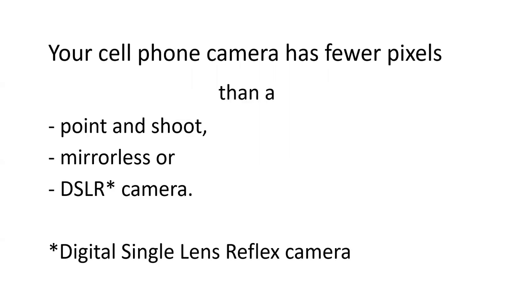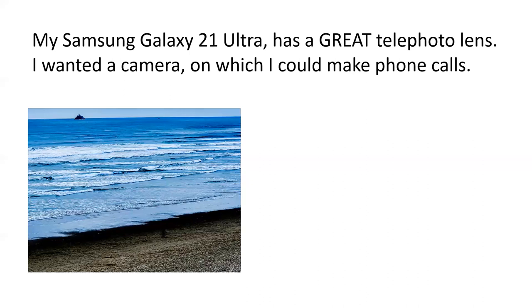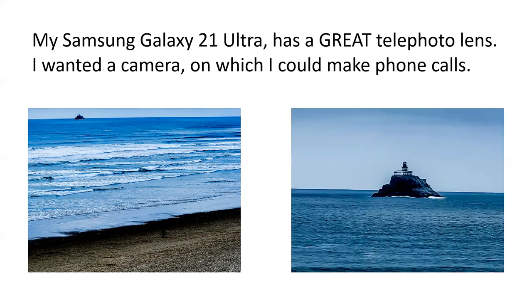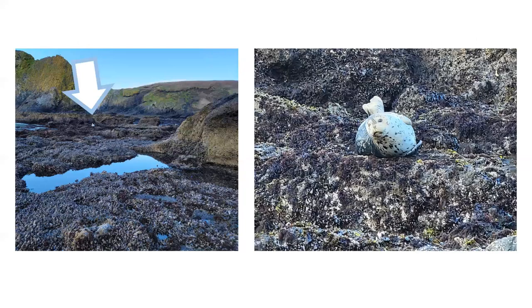Your cell phone camera has fewer pixels than a point and shoot, a mirrorless camera, or a DSLR camera. My Samsung Galaxy 21 Ultra has a great telephoto lens — I wanted a camera on which I could make phone calls. If you look off in the distance, with my cell phone I was able to zoom in this far — it's like a hundred times. You notice in the corner there the seal. Well, I was able to zoom in on it. Here's the seal more closely.